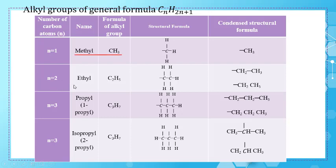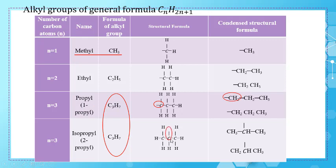For propyl, there are two types: 1-propyl and isopropyl (also called 2-propyl). Both have the same number of carbon atoms, but the difference is which carbon atom is attached to the main chain. If the terminal carbon of the chain is attached to the main chain, the group is called 1-propyl. If the central carbon is attached to the main chain, the group is called isopropyl or 2-propyl.